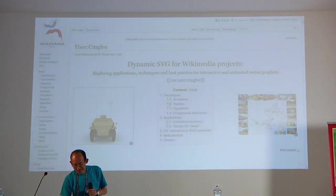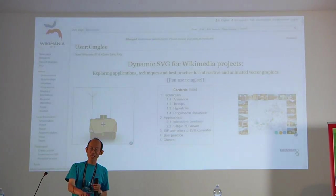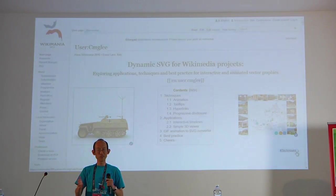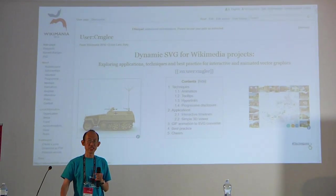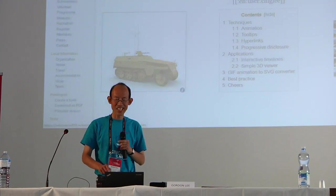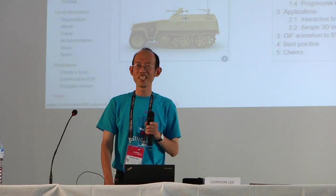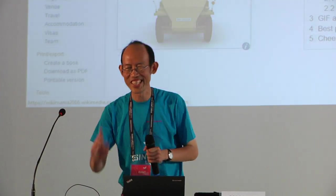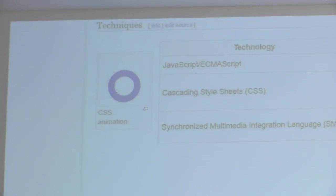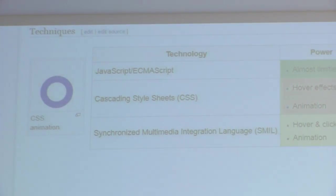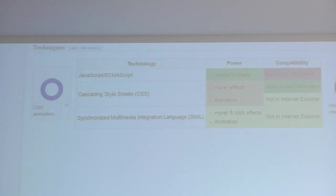So, techniques. There are three ways generally to do SVG animation. The first and most powerful is JavaScript, or ECMAScript. The main problem is that for security reasons, uploads to Wikimedia don't allow JavaScript. So if you have JavaScript in an SVG and try to upload it, it just says the file is not acceptable.